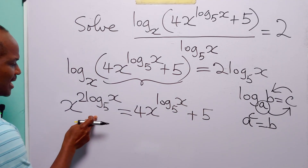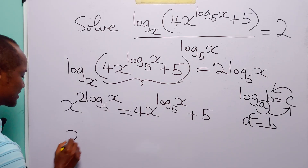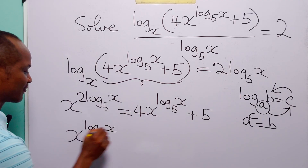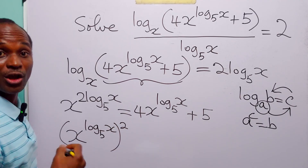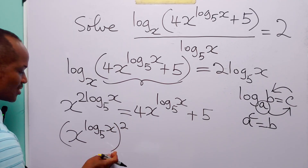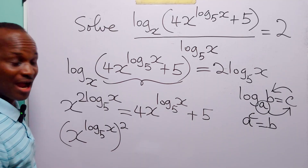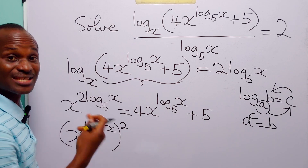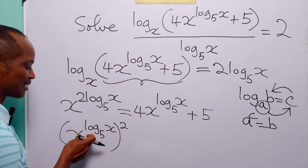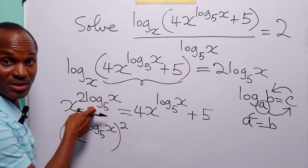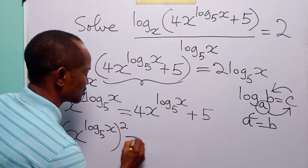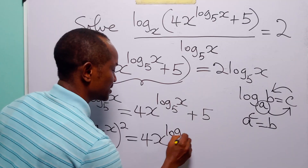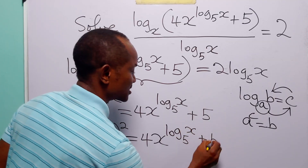You know that we can write this left-hand side as x to the power log base 5 of x, all squared. Because to get rid of this bracket, all we have to do is multiply these two powers. When we multiply them, what we have is 2 times log base 5 of x, which is exactly what we have here. And on the right-hand side, you still have 4 times x to the power log base 5 of x, plus 5.